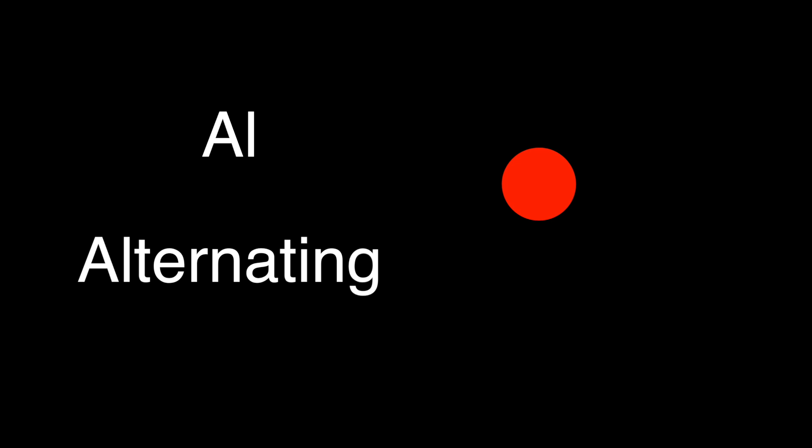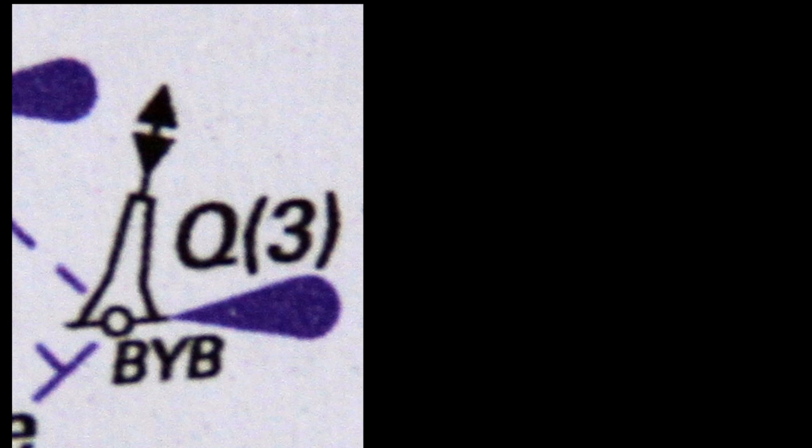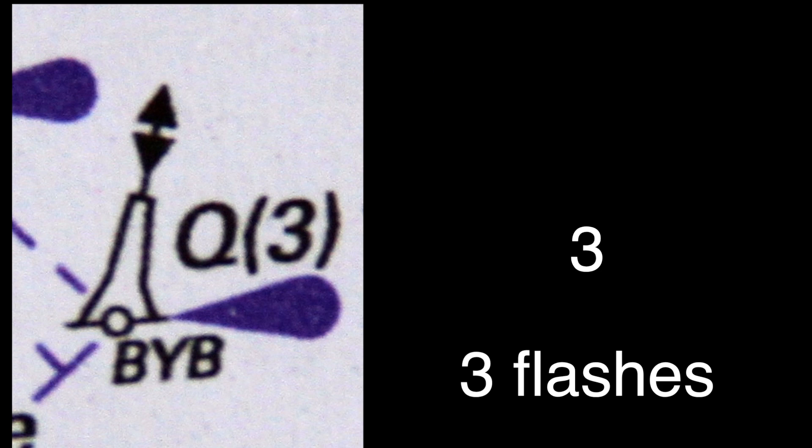F stands for Fixed. Al stands for Alternating colours. Q stands for Quick. A number in brackets indicates flashes in a group — for example, three means three flashes in a group.